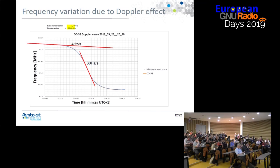This is the frequency variation due to the Doppler effect. When the satellite is near the horizon, you will have a high Doppler effect but with low variation. When the satellite is at zenith, you will have a low Doppler effect but a high variation — something like 880 Hz per second.